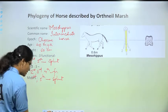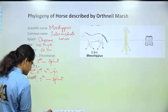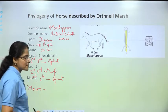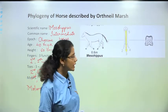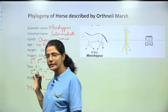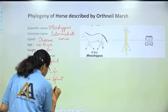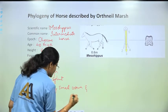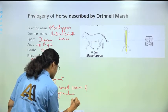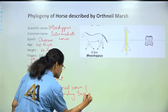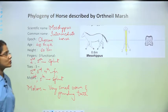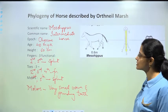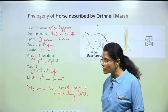The molars of Mesohippus were the same type as the previous form: very small crown and grinding teeth. So Mesohippus, the Intermediate Horse, existed in the Oligocene period 40 million years ago.